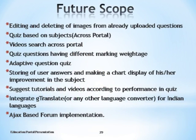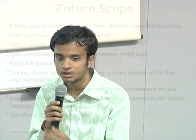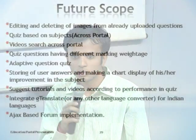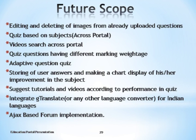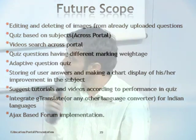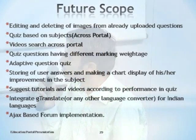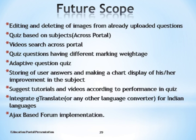The future scope of the whole portal spans all five modules. For images: handling can be improved — deleting and editing of images can be done. Video search across different portals if multiple portals are implemented. For the quiz: a GRE adaptive quiz can be added. Tutorials and videos can be automatically suggested using artificial intelligence — if a student performs poorly on certain subtopics, those tutorials and videos can be suggested. G-Translate or Google Translate for other Indian languages can extend the portal to a vast community.